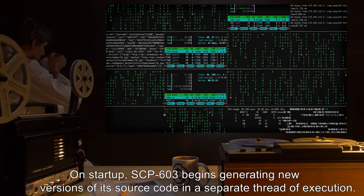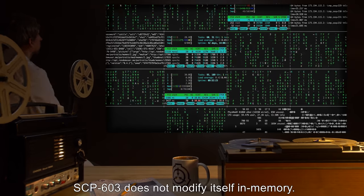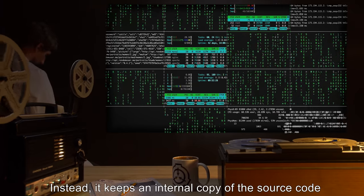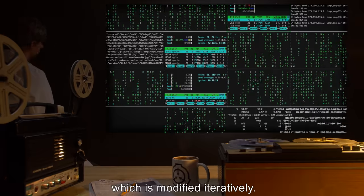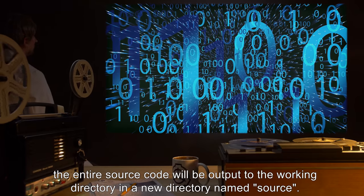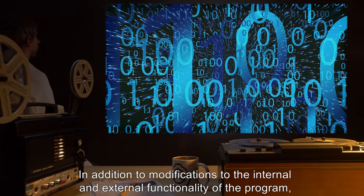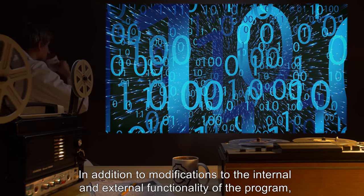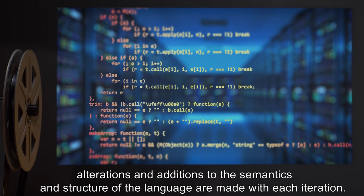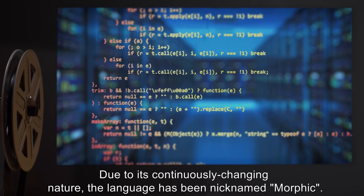On startup, SCP-603 begins generating new versions of its source code in a separate thread of execution. SCP-603 does not modify itself in memory. Instead, it keeps an internal copy of the source code, which is modified iteratively. On a clean termination, the entire source code will be output to the working directory in a new directory named Source. In addition to modifications to the internal and external functionality, alterations and additions to the semantics and structure of the language are made with each iteration. Due to its continuously changing nature, the language has been nicknamed Morphic.